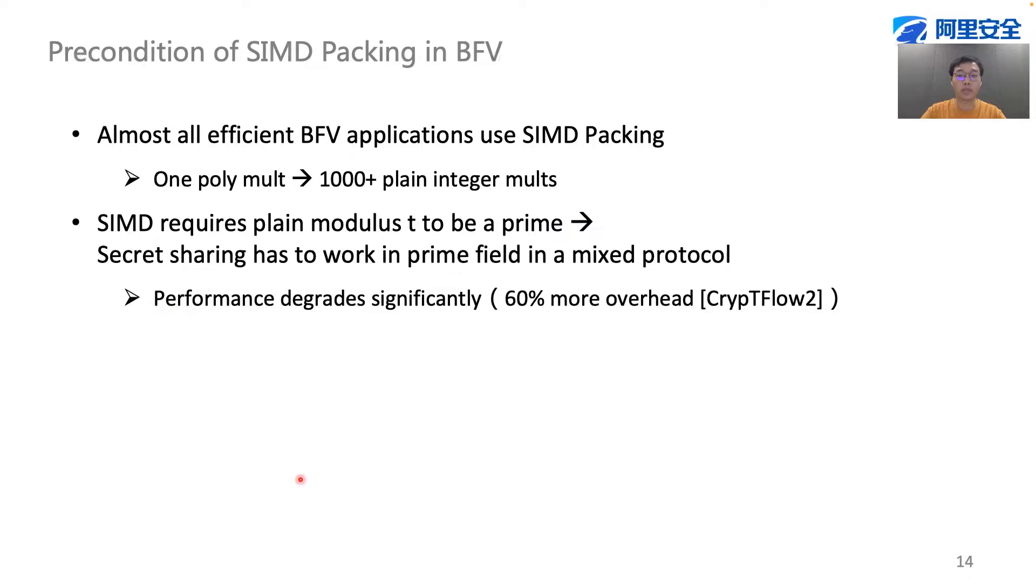Especially for multiplication. If we multiply two polynomials in this encoding, it is equivalent to perform an integer multiplication at the same time. For this packing technique to work, there is a precondition that the plaintext modulus t has to be prime. And it turns out that this requirement has a negative impact on the performance of secret sharing, with more than 50% overhead, according to the analysis of CryptoFlow2.